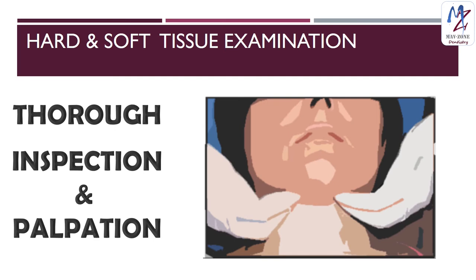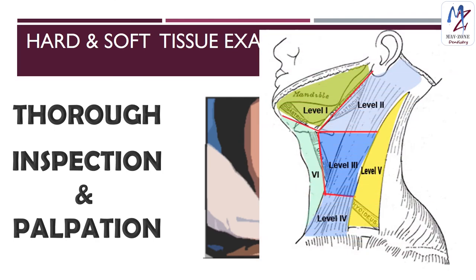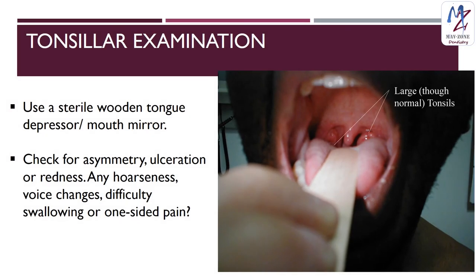Remember that not all tender lymph nodes are indicative of malignancy — more commonly these are due to an inflammatory cause and should be ruled out first. The illustration shows the location of the various groups of lymph nodes in the neck, and orientation to these sites will be helpful during examination. Finally, the tonsils should be examined by depressing the tongue with a wooden tongue depressor. Check for asymmetry, ulceration, or redness. Any hoarseness, voice changes, difficulty in swallowing, or one-sided pain should be noted down.